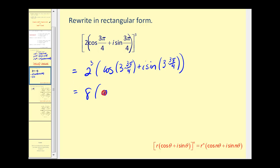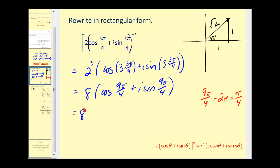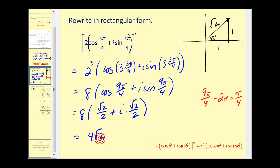We'll have eight times cosine nine pi fourths plus i sine nine pi fourths. Let's look at the angle nine pi fourths — it's coterminal with nine pi fourths minus two pi. Since two pi equals eight pi fourths, this gives pi over four. So this angle is coterminal with pi over four, which is 45 degrees in the first quadrant. Cosine of nine pi fourths is one over square root two, or square root two over two when rationalized. The same for sine of nine pi fourths. So we have four square root two plus four i square root two.